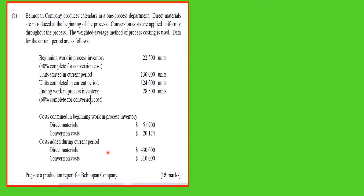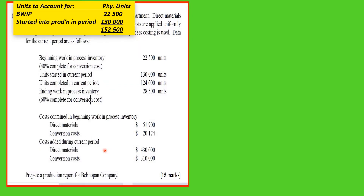The first thing we should do when working a problem like this is to account for the physical units. Whether you are using weighted average or FIFO, you always account for physical units first. Beginning work in process is 22,500 units, and units started into production in the period are 130,000. When we add the two together, we have 152,500 units in process during the period.